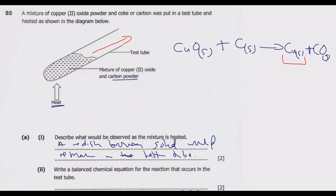Roman numeral two: write a balanced chemical equation for the reaction that occurs in the test tube. Checking the balance: one copper, one copper; one carbon, one carbon; one oxygen, one oxygen. So this equation is already balanced.